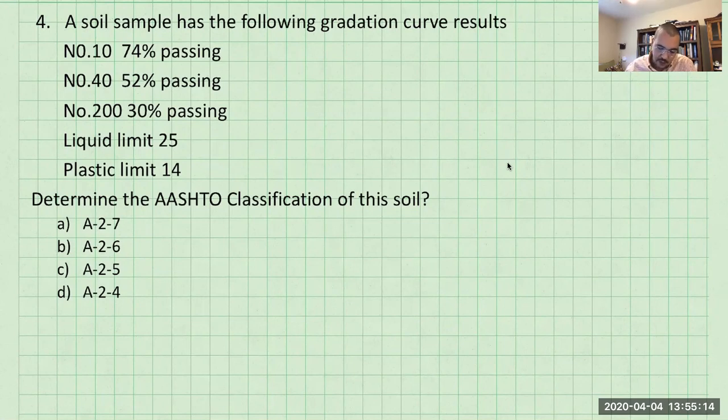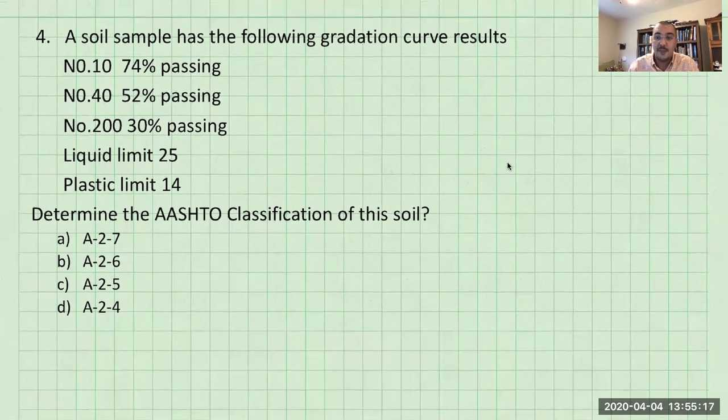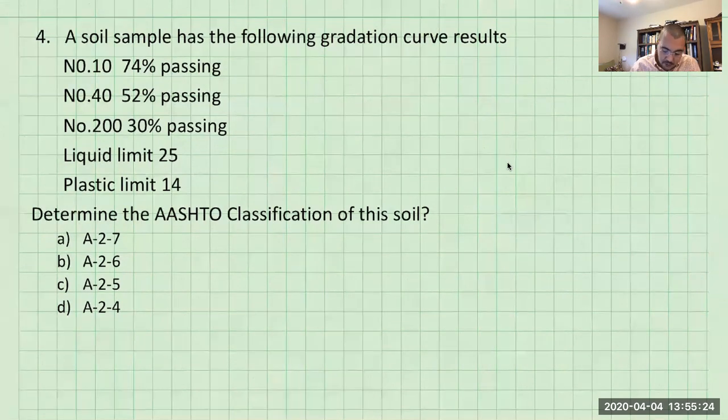So the AASHTO classification of the soil is the classification that is mainly used by the Department of Transportation or the DOT.